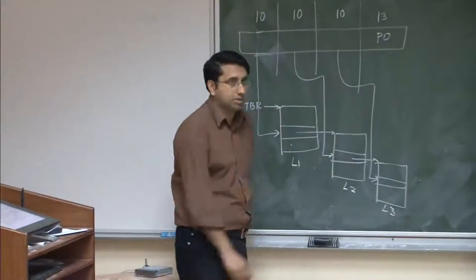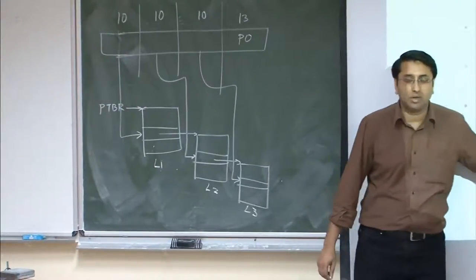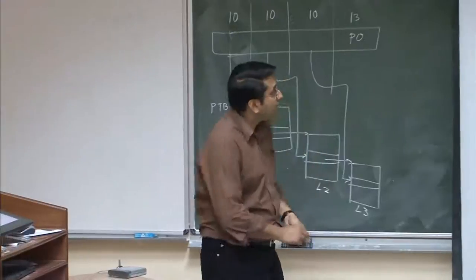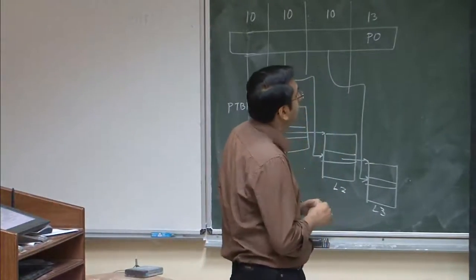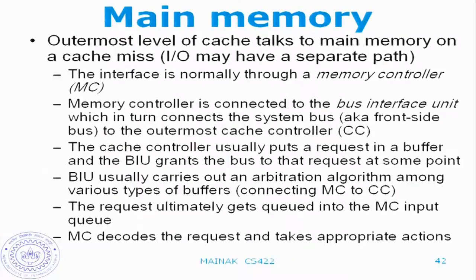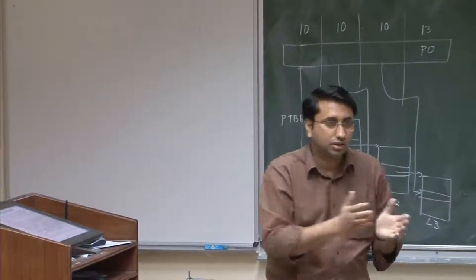The remaining 21 bits of the virtual address in Alpha 21264 are used to identify the segment — it supports three segments. The outermost level of the cache hierarchy talks to main memory on a cache miss. For example, with L1 and L2, only on an L2 miss do you talk to main memory. IO devices may have a separate path to main memory as well.